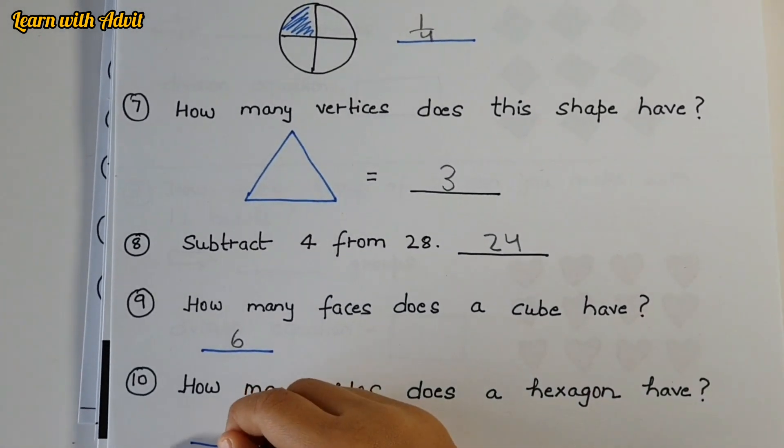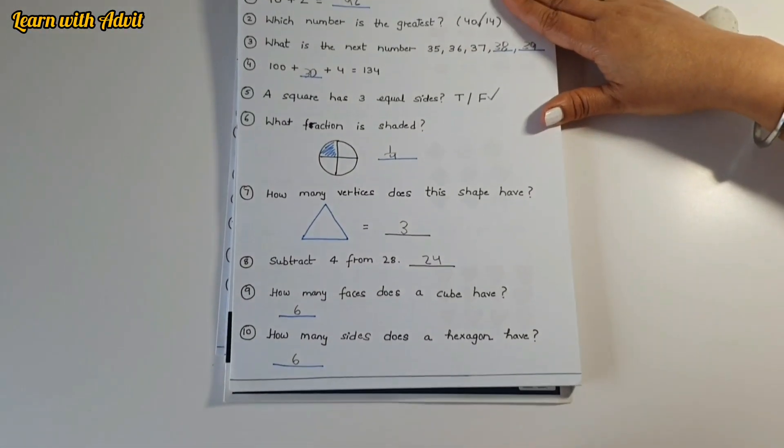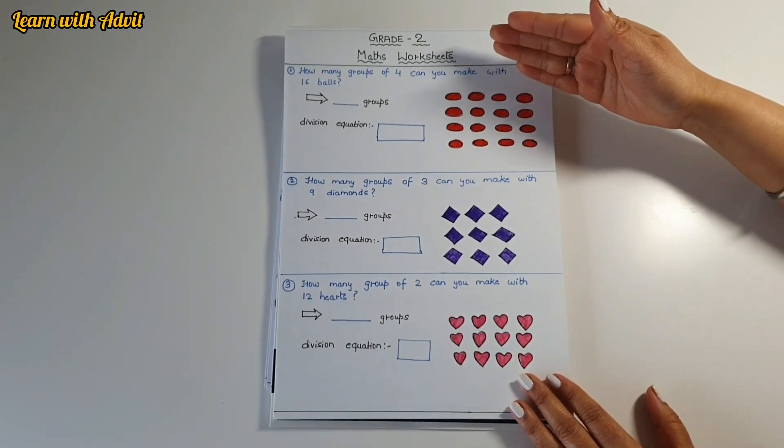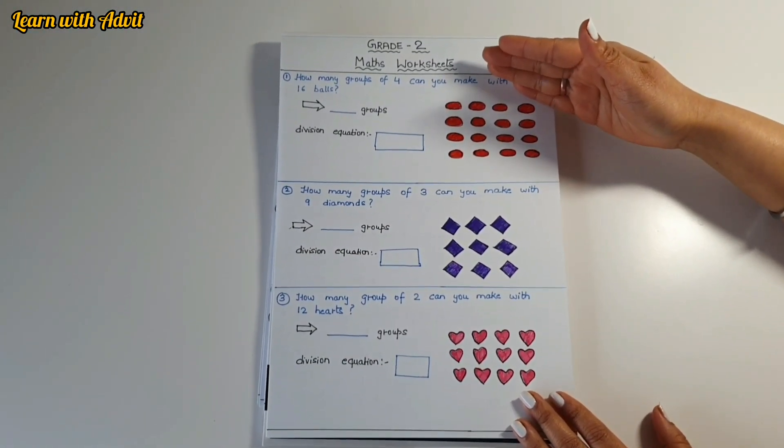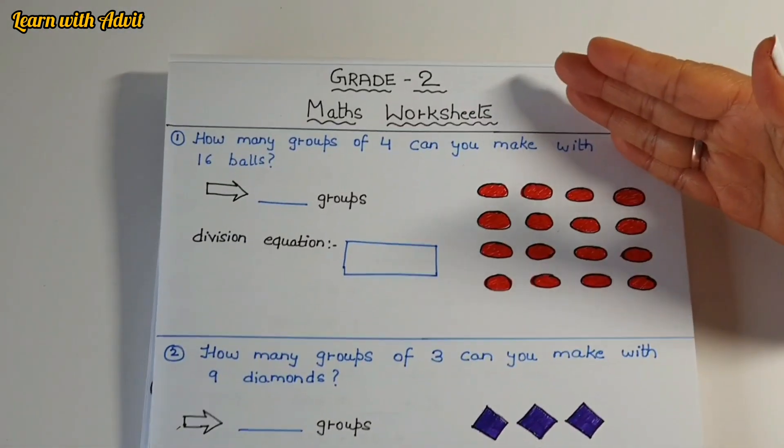How many faces does a cube have? Six, good job. How many sides does a hexagon have? Six. Octagon? Eight. Very good. So these are the group and division equation questions.